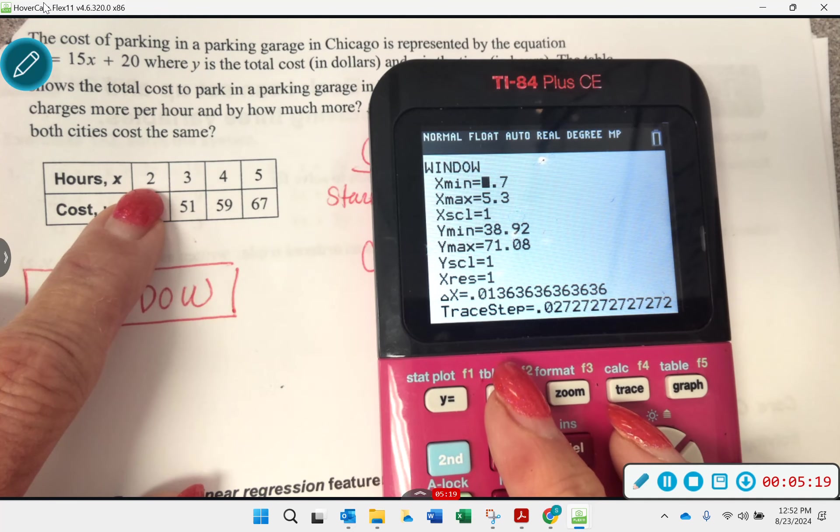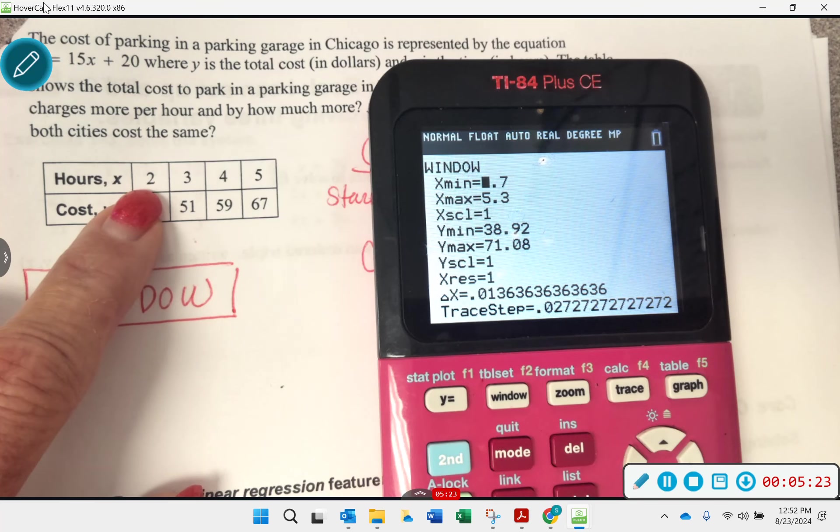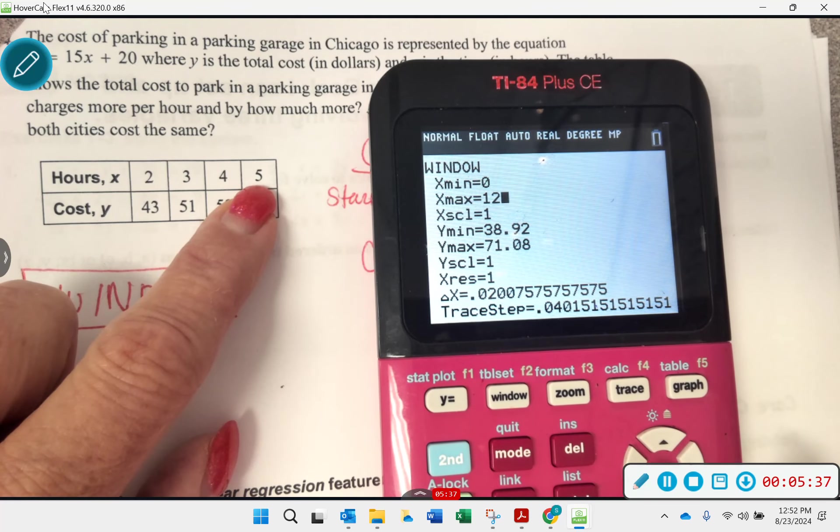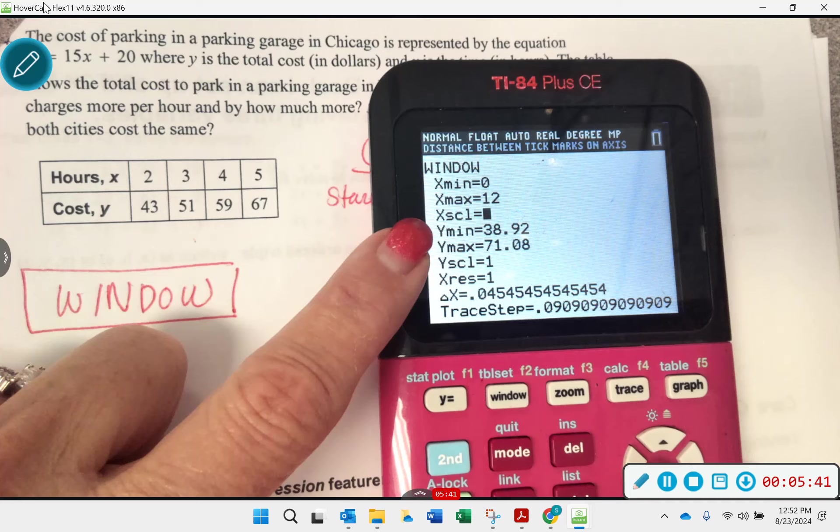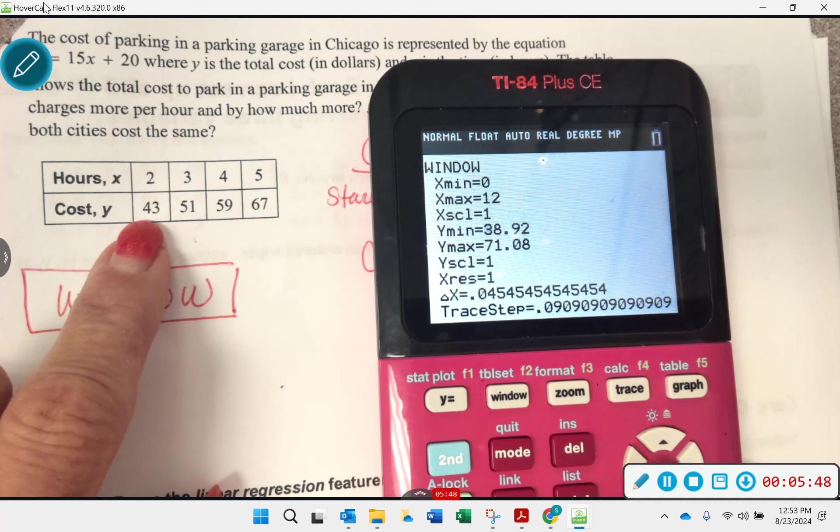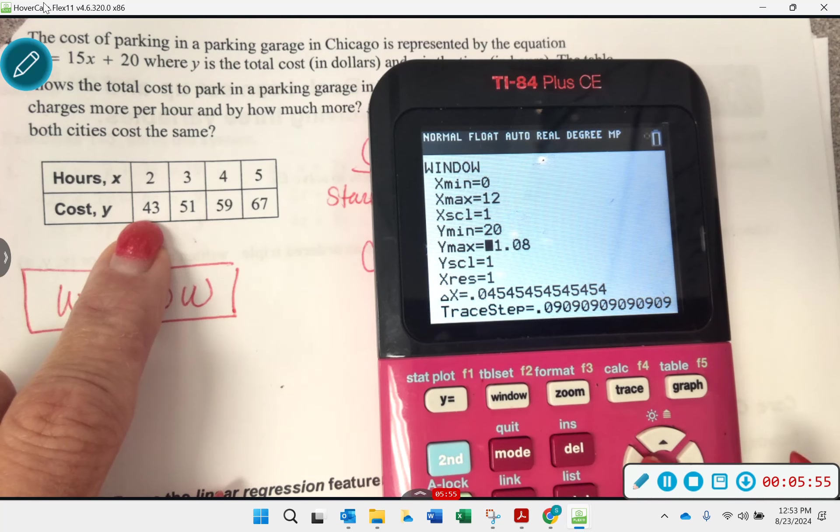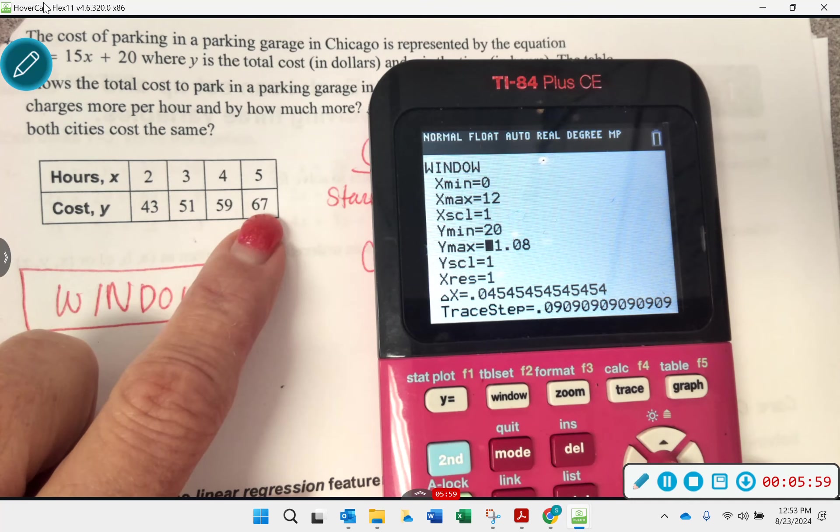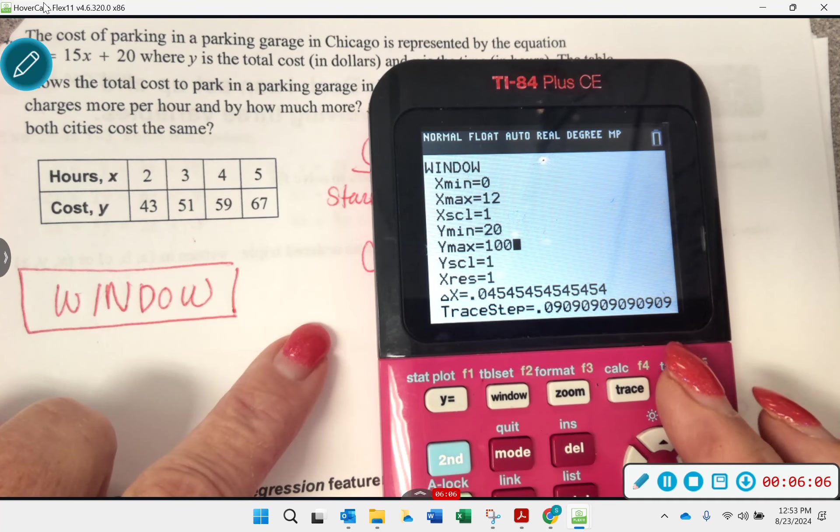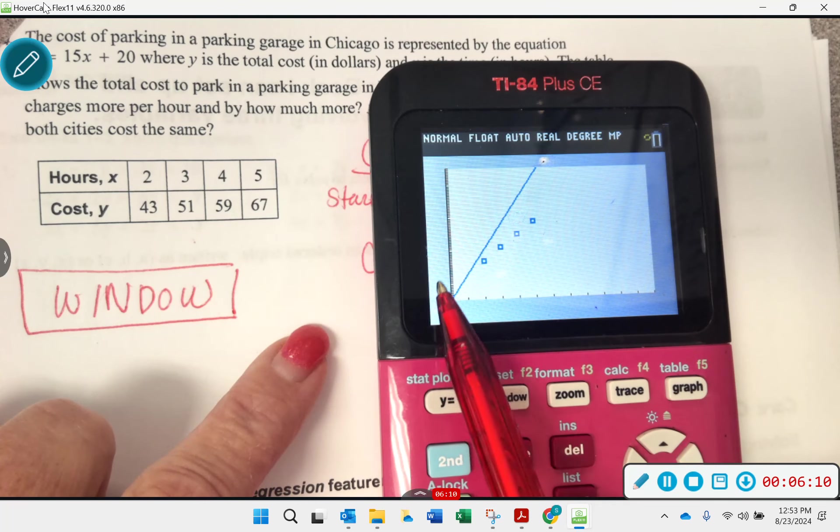Window is a very helpful button to use. I want you to look at this table of values. And I want you to go to the window. The lowest x that I use here is 2. But theoretically, how long could we be in that parking garage? We could just drive in and leave, right? Almost like 0, right? So I'm going to make this 0 for my x minimum. The x maximum we have is 5. But we could stay there for a long time, right? Let's make it 12. 12 sounds good. This stands for x scale. I'm never going to change that. The y minimum. What's the lowest cost we have here? 43, so I want to go lower than that. Let's do 20. We've got to be lower than it. Okay, and then our highest y value we have is 67. I'm going to go higher than that. I'll go 90. I'll go 100. Doesn't matter as long as you're higher. And now I'm going to hit graph.